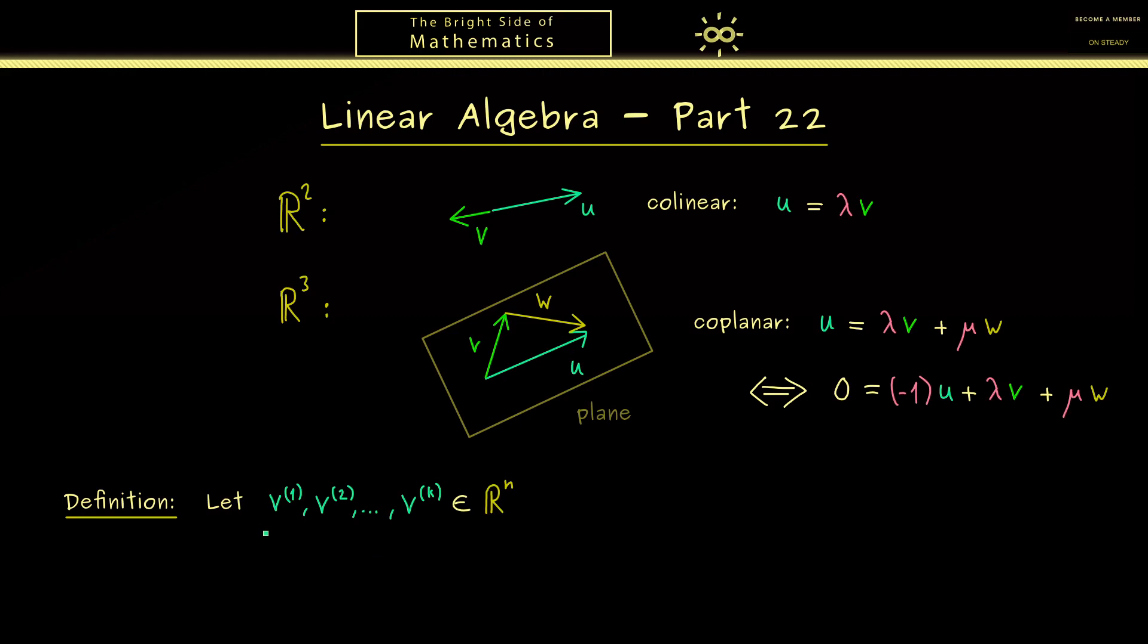So let's simply call them v¹, v², and so on, where I use an upper index such that you don't get confused with the components of a vector.